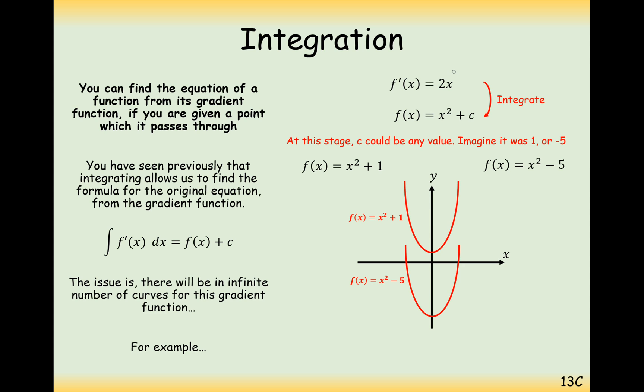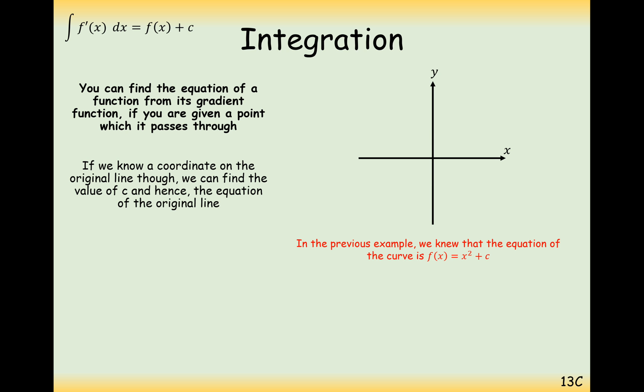What we're going to do in this video is work out what c is, given the gradient function and something else. What we need here is an extra piece of information. If we know a coordinate that's on the curve we can identify the exact curve. We'll take whatever curve that we need and move it up and down, which is effectively what we're doing when we're adding on c or subtracting a number to position it where it goes through that coordinate.